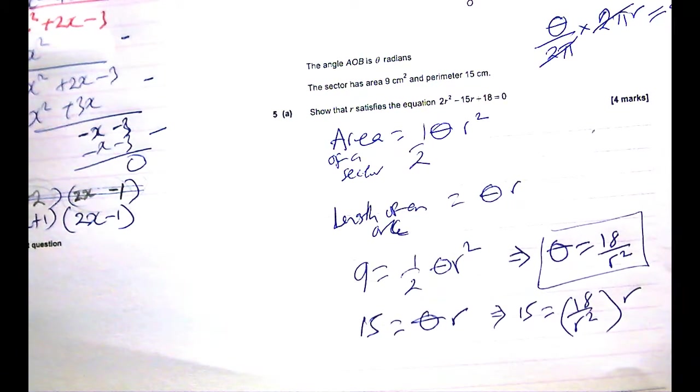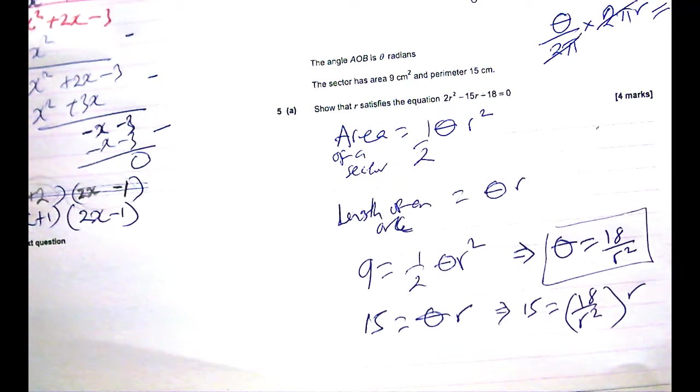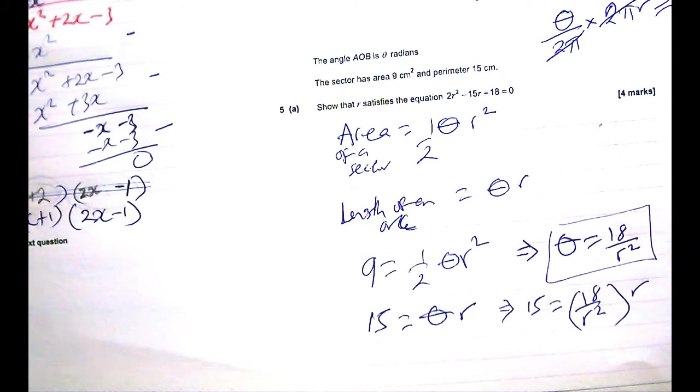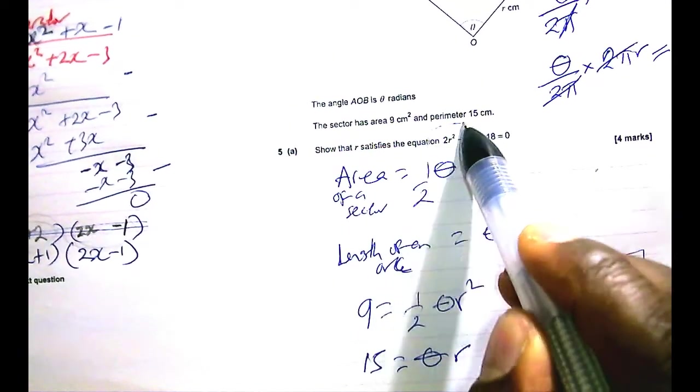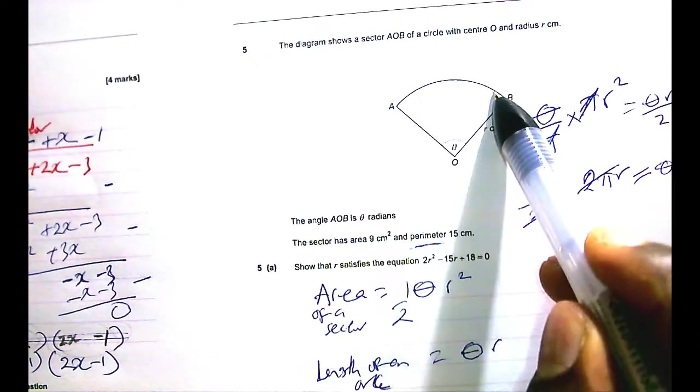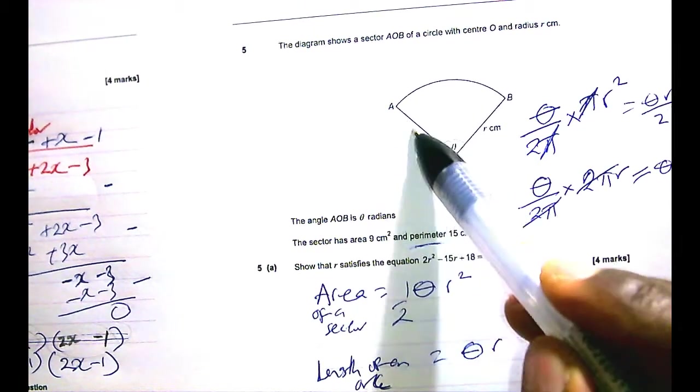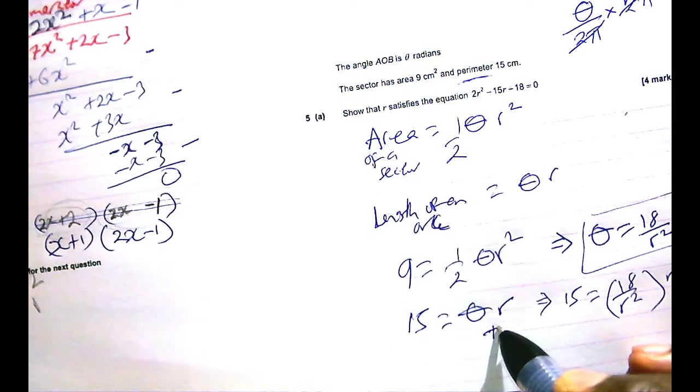Now, let us cross multiply. Okay? So if I multiply both sides by R²—oh, there is a mistake somewhere. No one reminded me. 15 is not θR. 15 is not the length of the arc. 15 is supposed to be the perimeter of the shape. And of course, in this case, the perimeter would be the length of that arc plus the radius on this side and the radius on the other side. So we actually have 2R. So this is θR plus 2R.